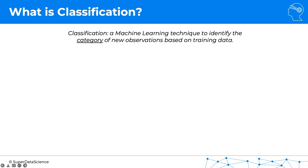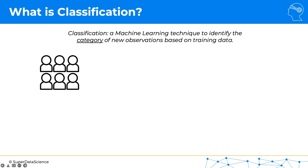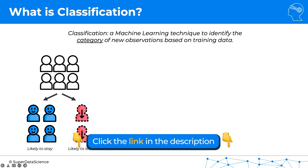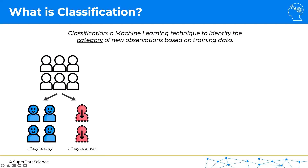There are a variety of applications of classification, from medicine to marketing to business and lots of different areas. For example, you have customers of a business and you would like to predict which ones are likely to stay and which ones are likely to leave — this is also called churn modeling. If you can predict which customers are likely to leave in the next month or six months, you can take actions like sending special offers or gathering feedback so that they stay. It's a very powerful tool for businesses.